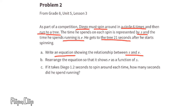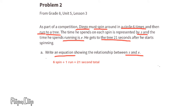Problem number two, from eighth grade unit 5 lesson 3. As part of a competition, Diego must spin around in a circle six times and then run to a tree. The time he spends on each spin is represented by S and the time running is R. He gets to the tree in 21 seconds after he starts spinning. Part a: write an equation showing the relationship between S and R. Six spins plus one run equals 21 seconds total: 6s plus R equals 21.